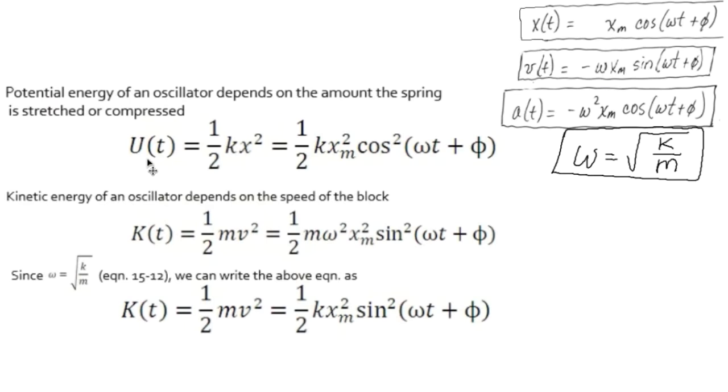The potential energy U of the spring we know is one half kx squared. The position x is changing. We can use our equation that describes the position of simple harmonic motion and plug it in here for x. When we square it, we get one half kx max squared times cosine squared.